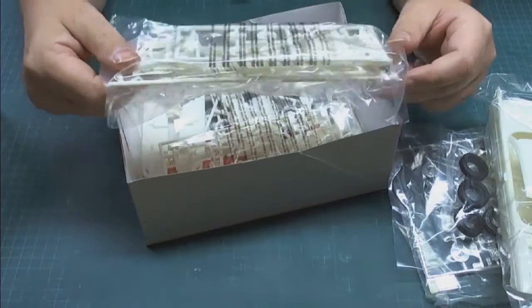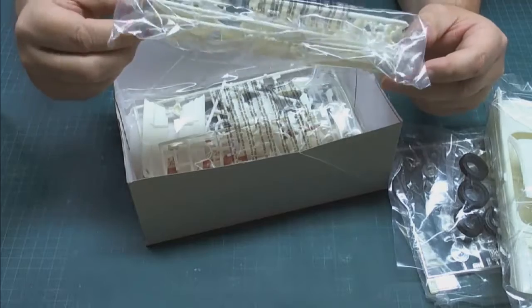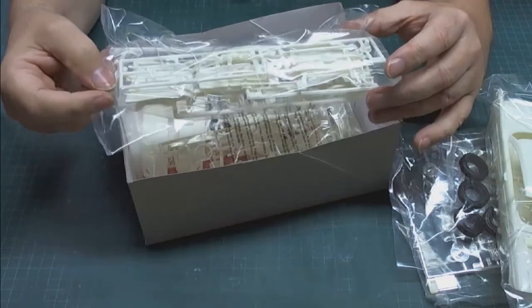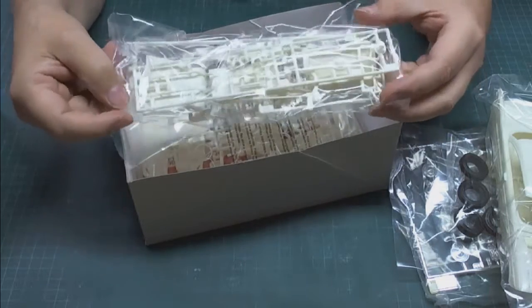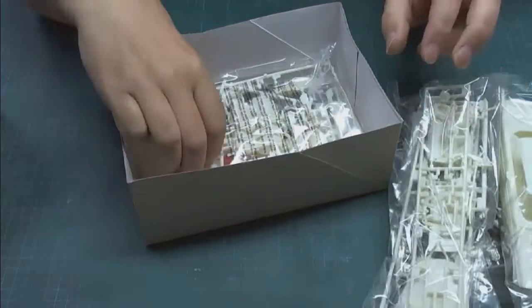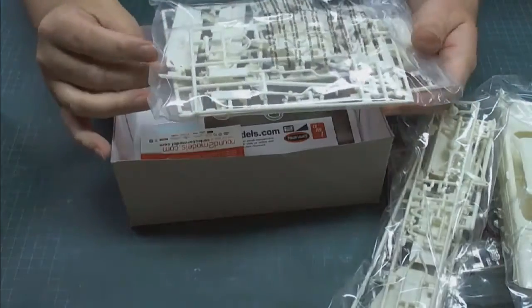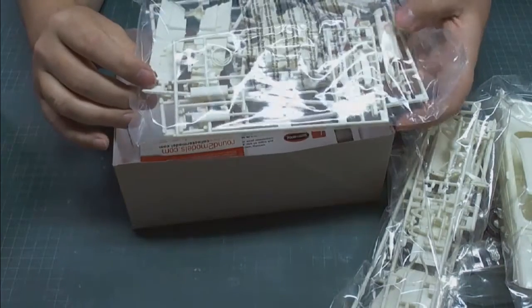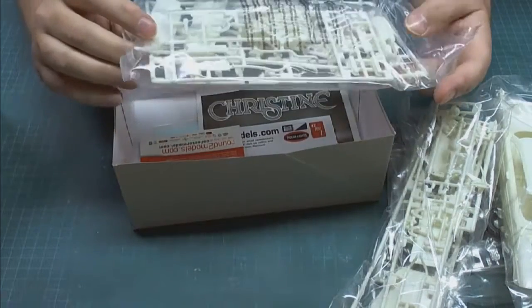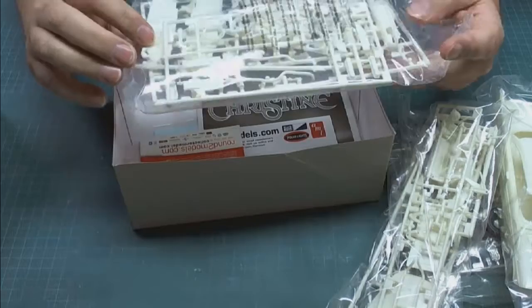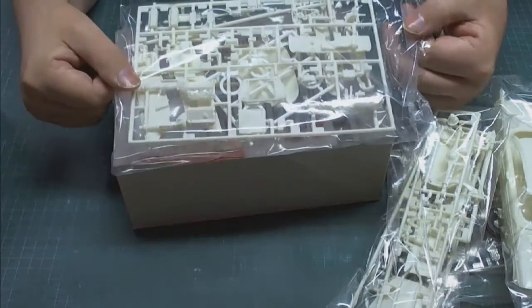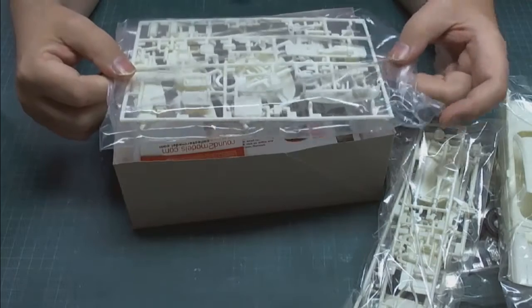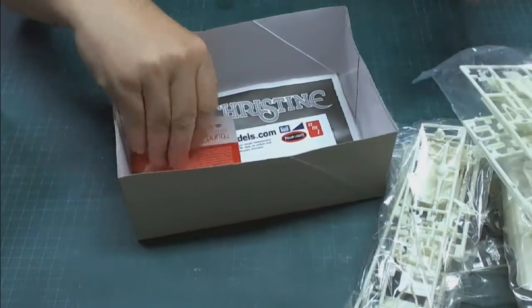In this bag we have a variety of parts which I believe includes the hood, some of the interior, some of the suspension, rear axle, that kind of stuff. And in this bag we have the rear valance, we also have the interior doors, the seats, some of the engine parts, the dashboard is here. So there's a lot of stuff there.